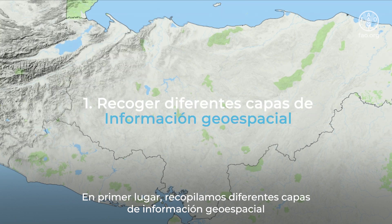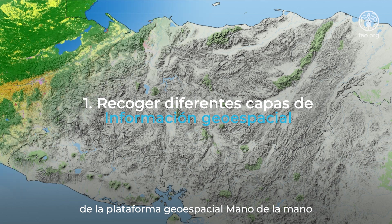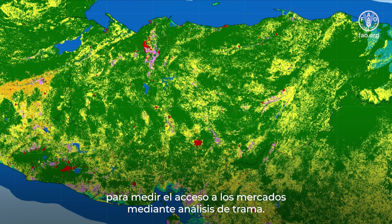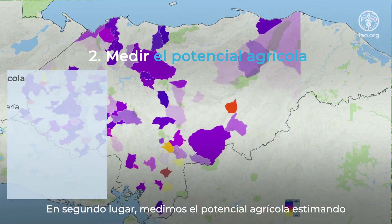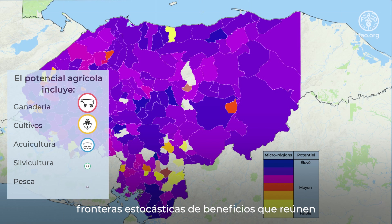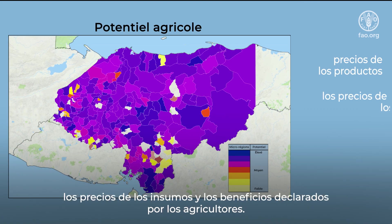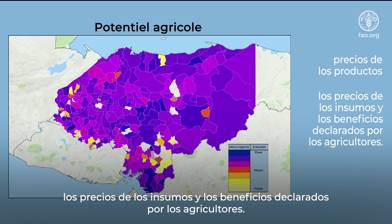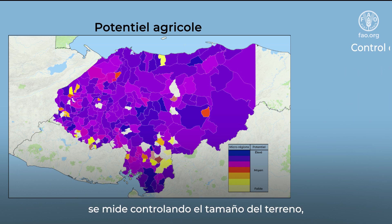What are the steps involved? First, we collect different layers of geospatial information from the Hand in Hand geospatial platform to measure market access using raster analysis. Second, we measure agriculture potential by estimating stochastic profit frontiers that bring together prices of products, input prices and profits reported by farmers.